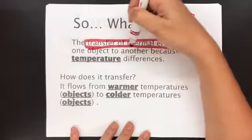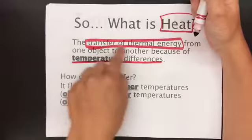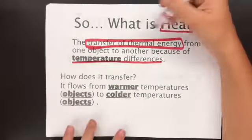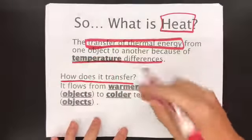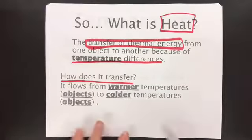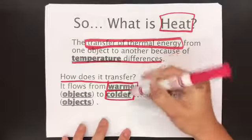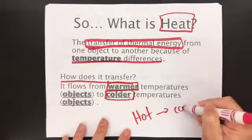Because one object to another has a temperature difference. So there's transfer of thermal energy because of temperature differences. How does it flow? How does it transfer? Remember, it typically, now remember, typically goes from the warm object to the cold object.